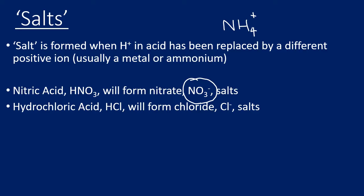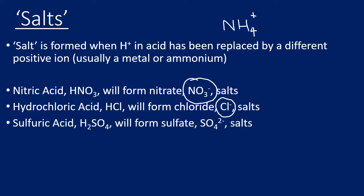Chloride is just a Cl minus ion. The third acid is sulfuric acid, which is H2SO4, and that will form sulfate salts. The ion for sulfate is SO4 2-. We do need to know those ions.